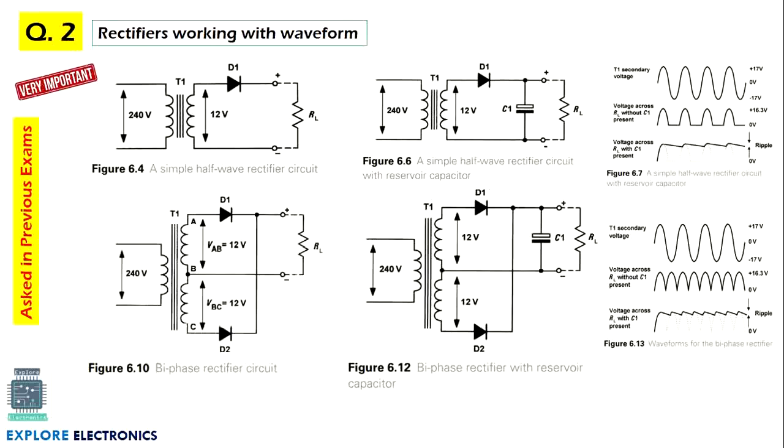The second one is rectifiers. These rectifiers are very important. It is asked many times in the previous examinations in basic electronics, where you will have three rectifiers: half-wave rectifier, full-wave rectifier. In full-wave we will be having biphase and bridge rectifier.